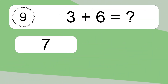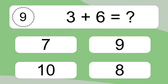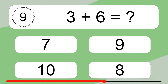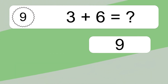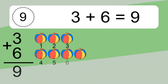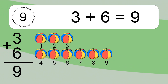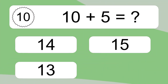3 plus 6 equals what? 3 plus 6 equals 9. Let's count it. 1, 2, 3, 4, 5, 6, 7, 8, 9.